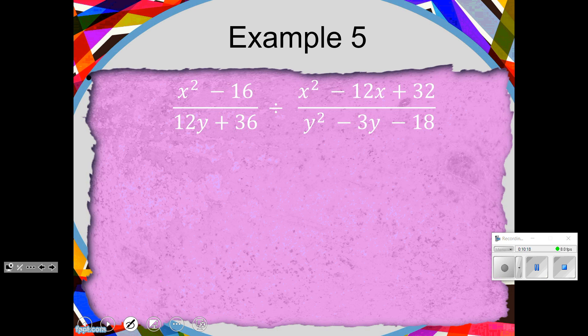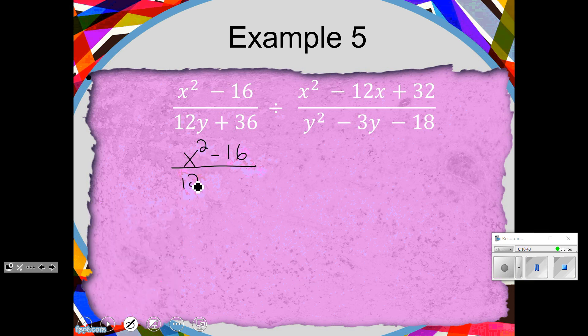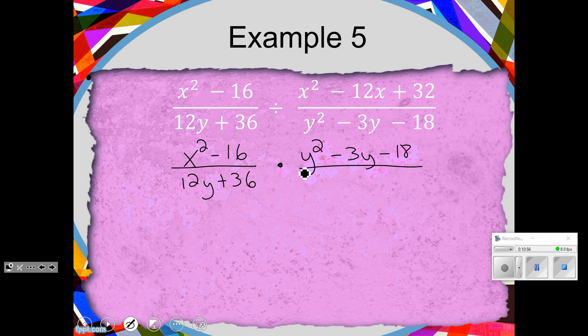So if we move to example 5, what do we remember about division? We don't divide — we multiply by the reciprocal. So we are going to copy, change it to multiplication, and then flip the second fraction — take the reciprocal. And these are supposed to be y's and x's; that's not a mistake. So then it becomes multiplication.